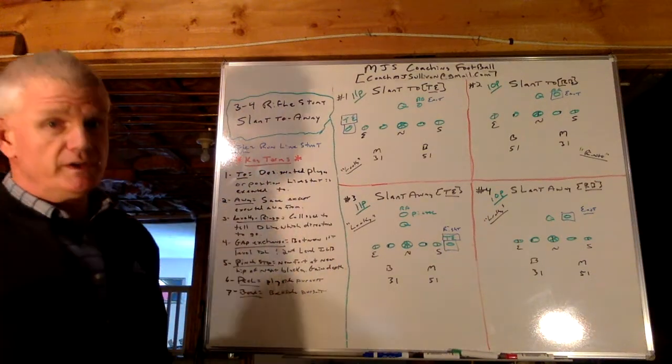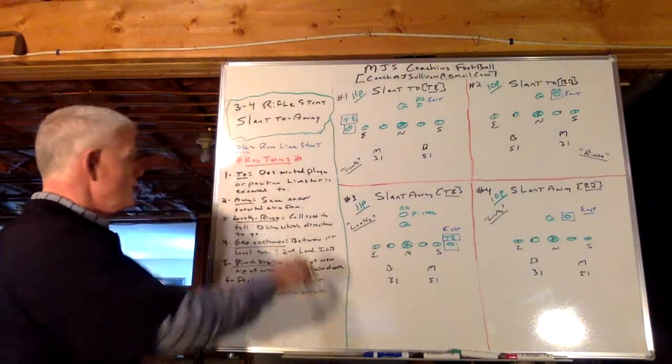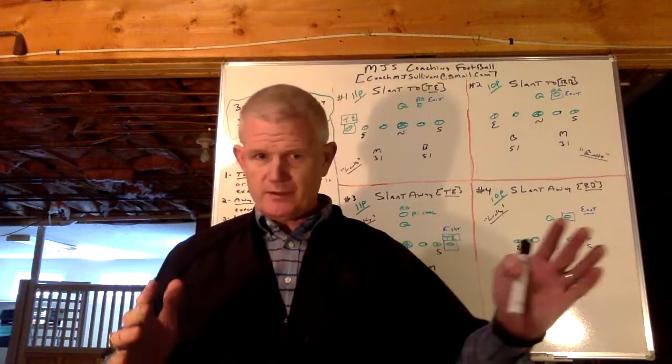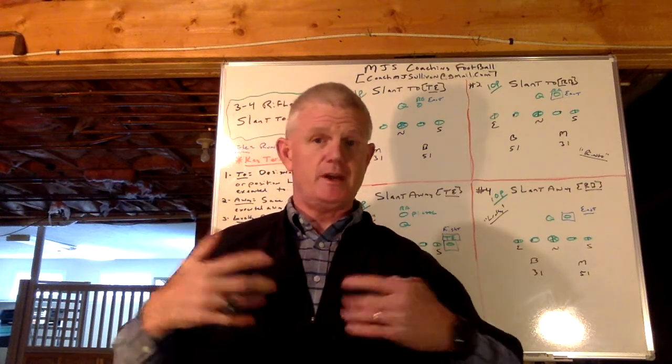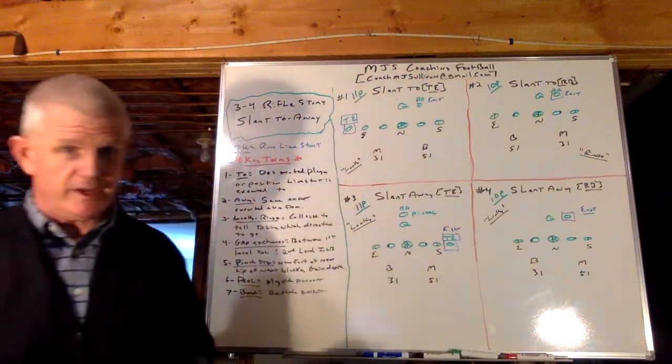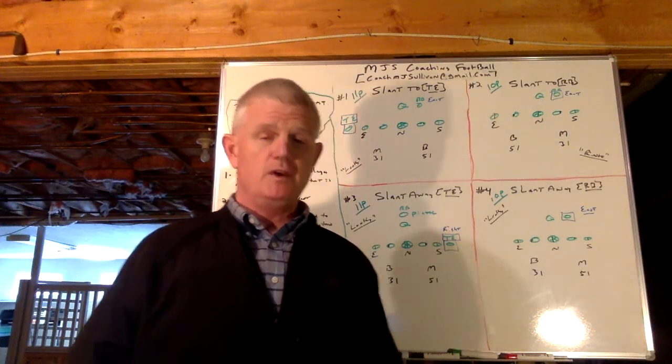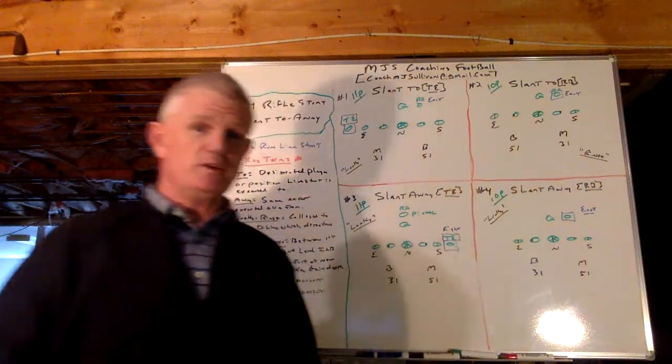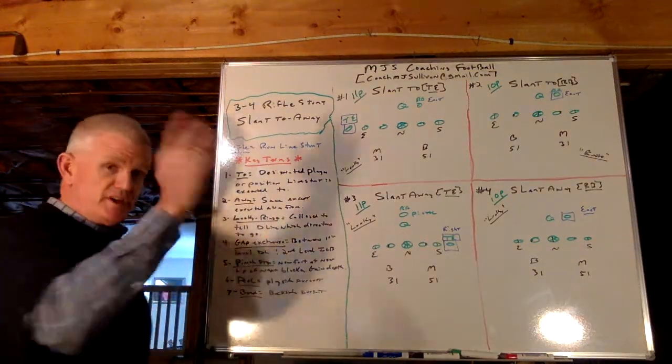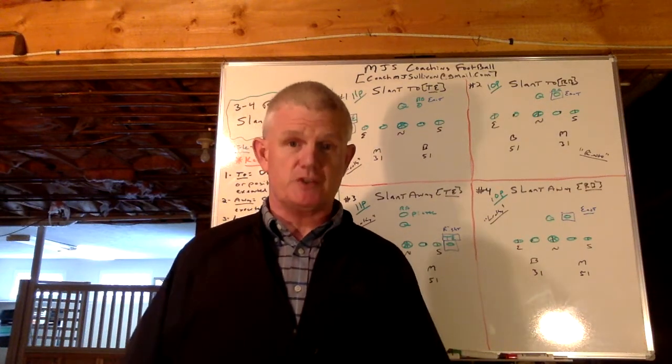A rifle is a run line stunt executed by the defensive line. So the key terms that go with that, you have to be able to make it simple for both your defensive line to know which direction to go and the inside linebackers who are directing them as to which direction to go. For us, two is the designated player or the designated position. So in this presentation there will be two different designated positions, and that is who we execute the rifle to. Away is the exact same concept except they're doing just that, going away from the designated position or player, and today it's going to be a position.